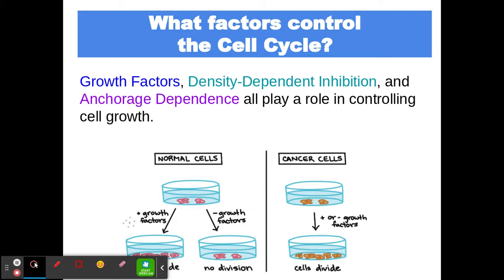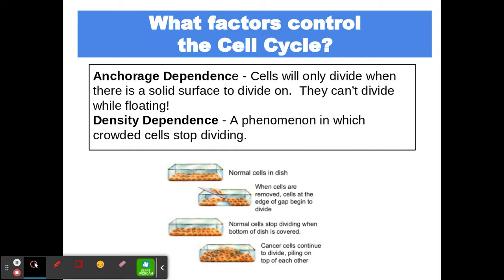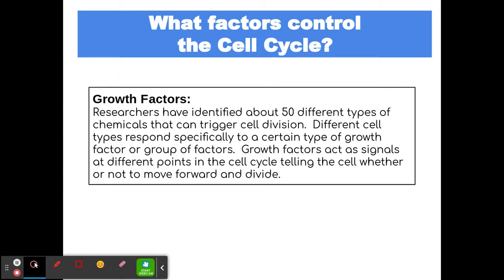Lastly, we need to talk about things that control the cell cycle. Different factors tell the cell when to divide. First is anchorage dependence — cells only divide if they're on a solid surface, not while floating. Second is density dependence — cells need room to grow, and if they get too crowded they stop dividing. Third are growth factors, which signal the cell to divide.